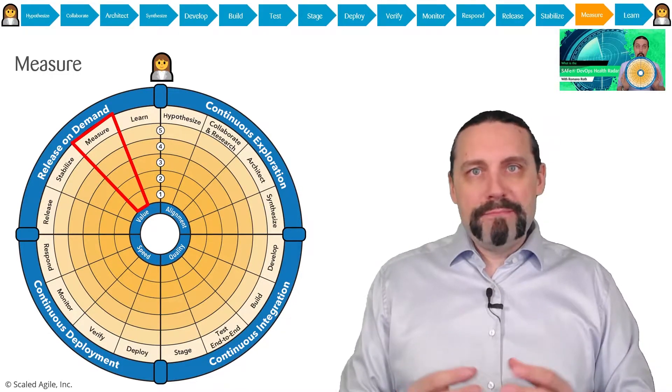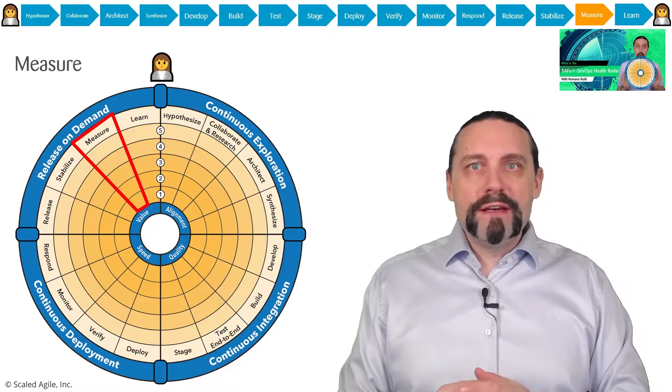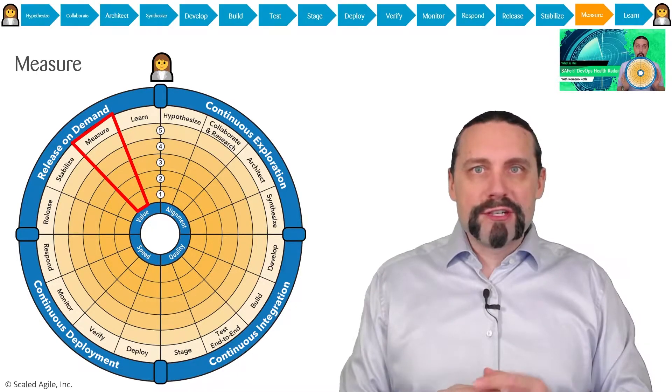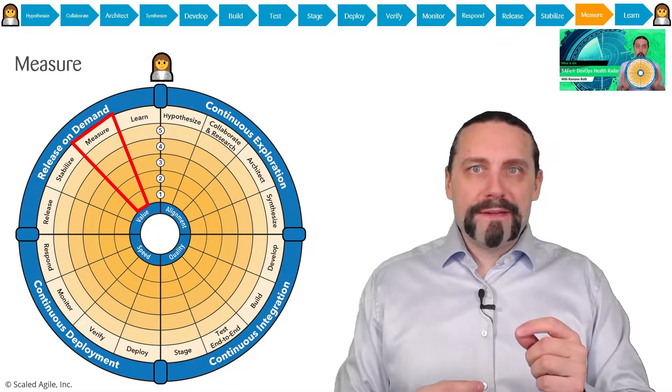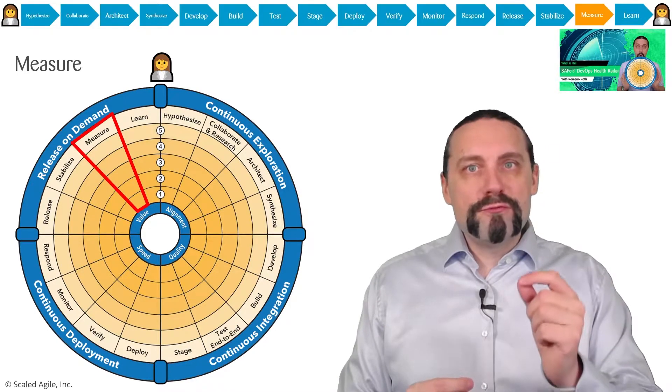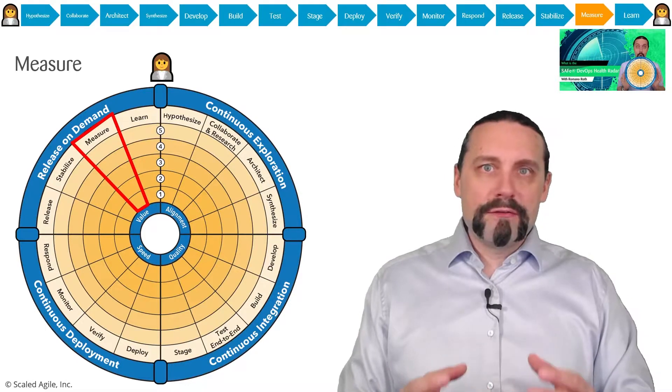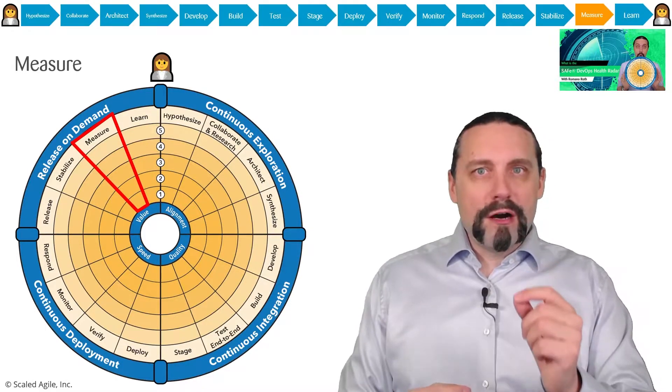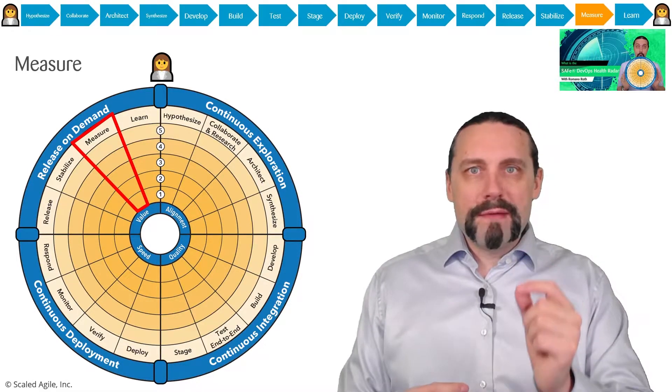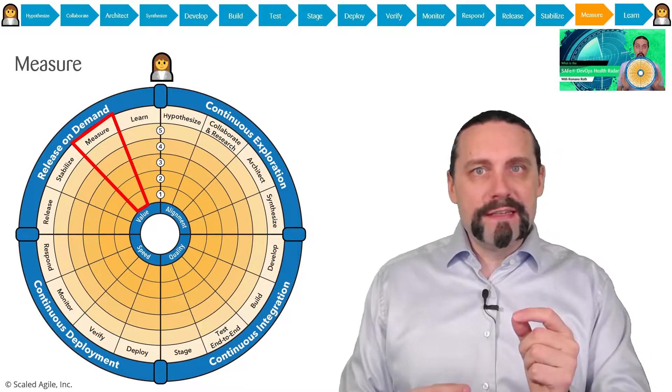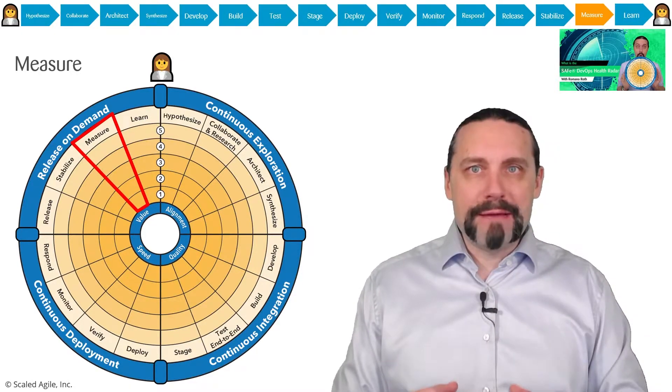With this epic hypothesis statement we go into collaborate and research. There we identify the real market need or customer need. After that we architect the minimal amount of architecture needed to prove the hypothesis of the epic.